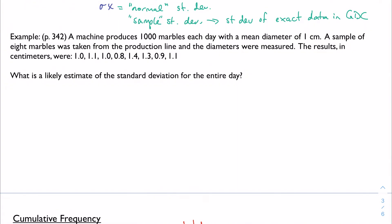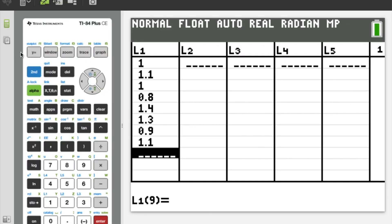So let's consider an example. A machine produces 1,000 marbles each day with a mean diameter of 1 centimeter. A sample of 8 marbles was taken from the production line, diameters were measured, and the results are as follows. What's a likely estimate of the standard deviation for the entire day? So the fact that we're talking about an estimate for the standard deviation, this is where we're talking about this n minus 1 business, because the entire day's production is going to be the population. We're not talking about just the standard deviation of what comes off the line. We're talking about the standard deviation of everything that we've done today. How can I estimate this based on just my sample that came off the line? Well, we're just going to do this the way that we've learned how to do it on our GDC. This problem I took from the book was designed to be done by hand, which is why they give you the mean, but we don't need that, fortunately. We can actually just do this on our GDC, and that's going to be fine.